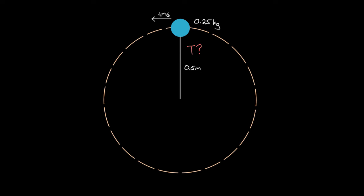If it's a force you want to find, the first step is always to draw a quality force diagram. What forces are on this yo-yo? Near Earth's surface, there's a force of gravity pointing straight downward with magnitude m times g, where g is positive 9.8. There's also a force of tension — the string is tied to the mass and can pull on it. Ropes can't push; they can only pull. So the tension points in toward the center of the circle. We'll label it with a capital T.